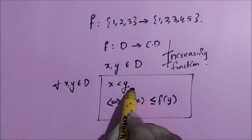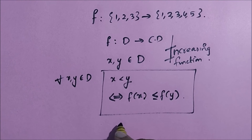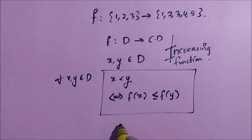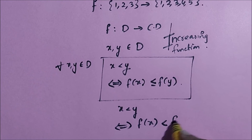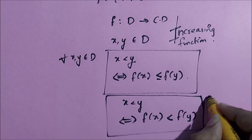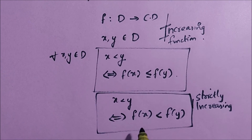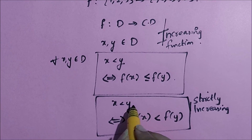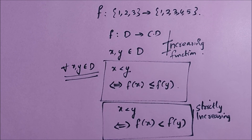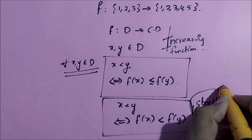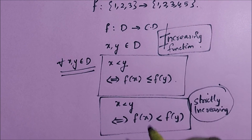Whenever x is less than y, it should be the case that f(x) is less than or equal to f(y). For a strictly increasing function, when x is less than y, f(x) should be strictly less than f(y) — there is no equal to. If f(x) is less than or equal to f(y) for all x, y in the domain whenever x is less than y, we say it is an increasing function. If f(x) is strictly less than f(y), we say it is a strictly increasing function.